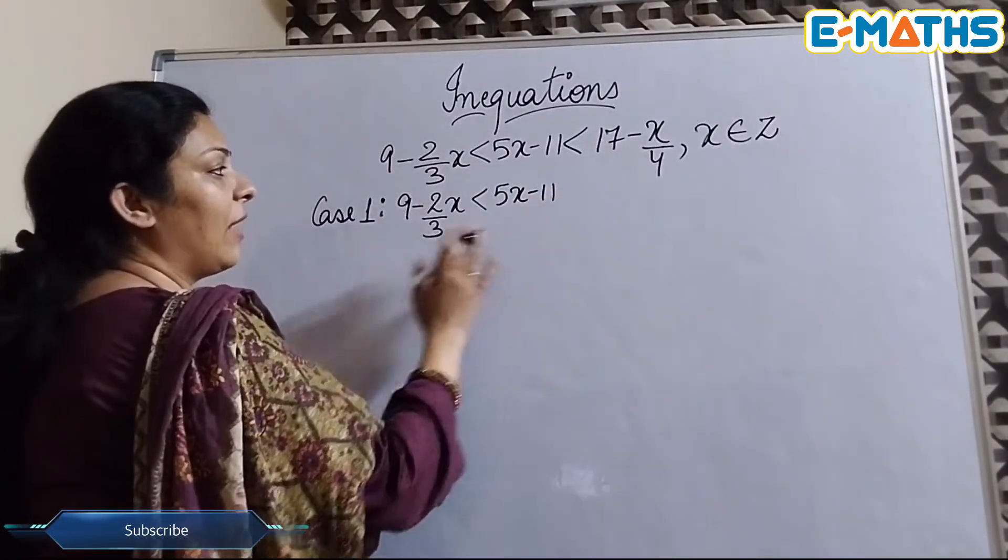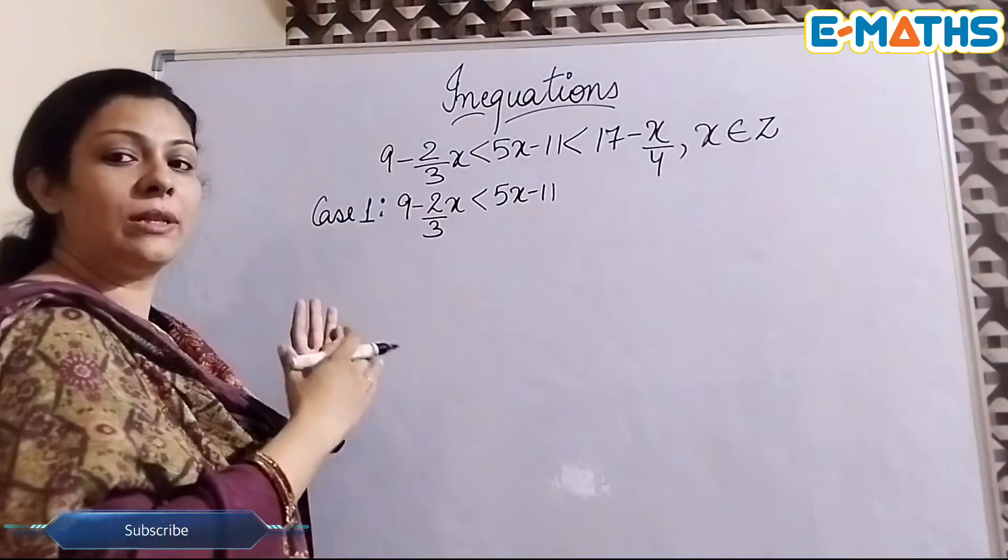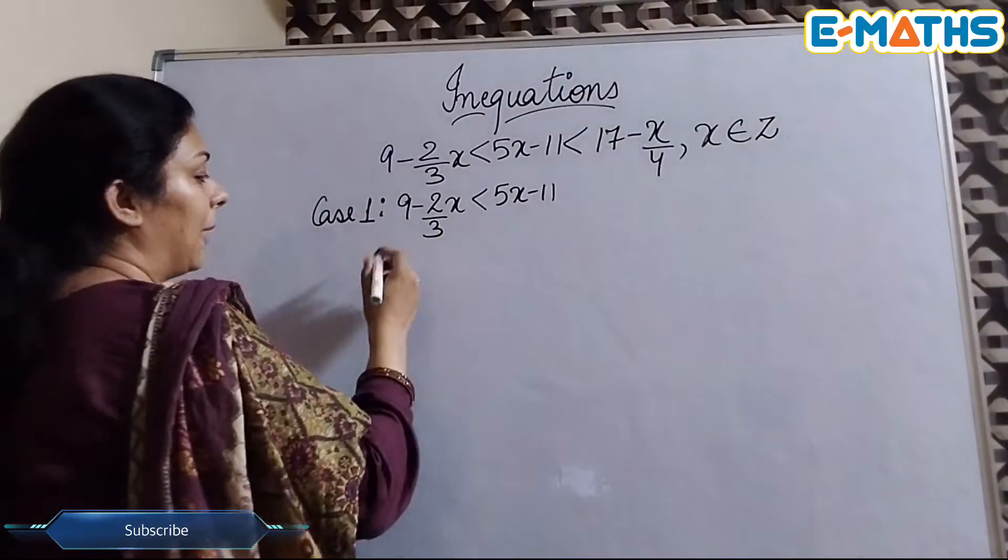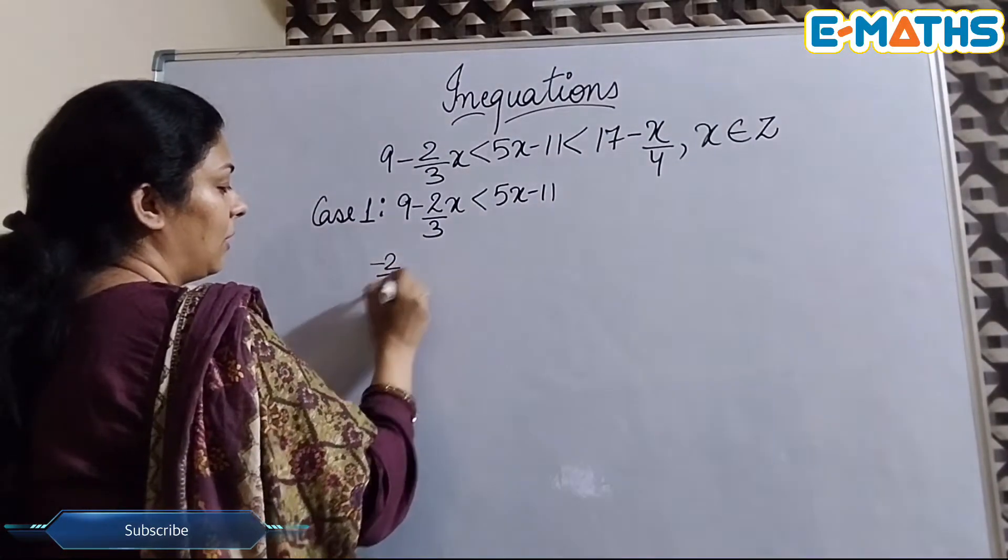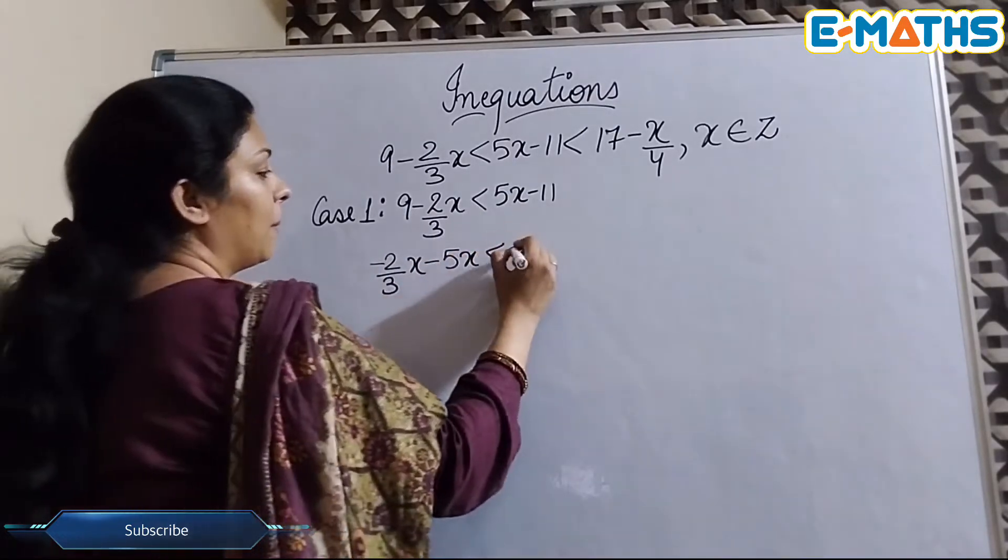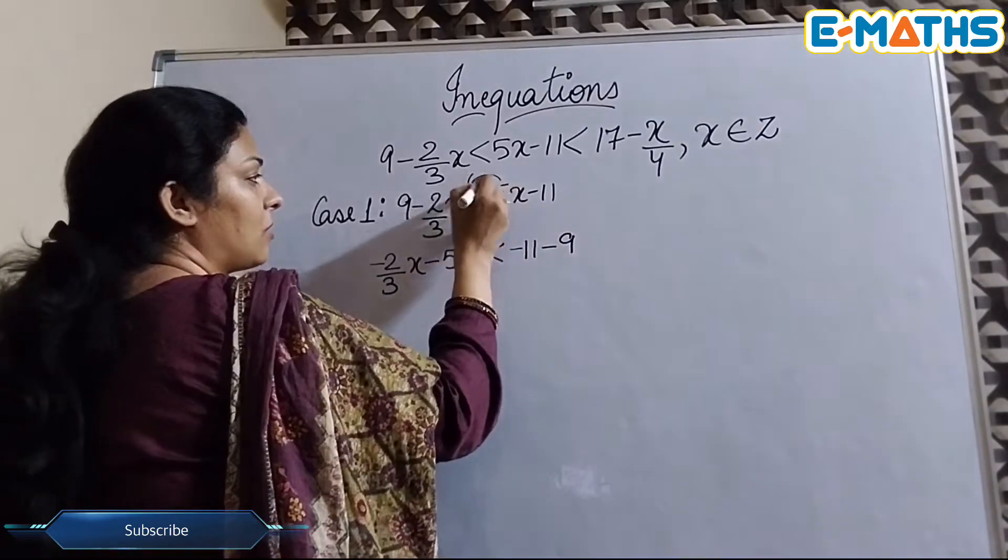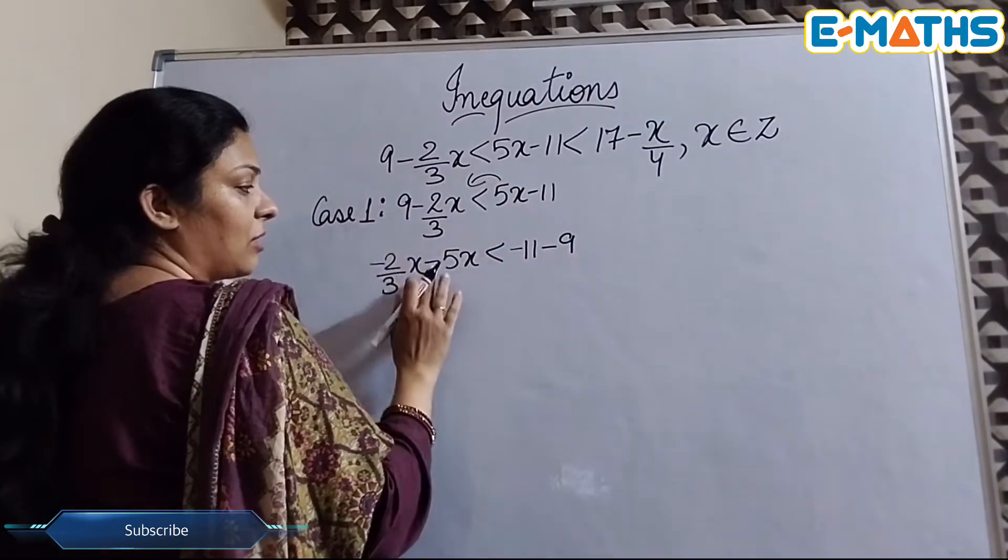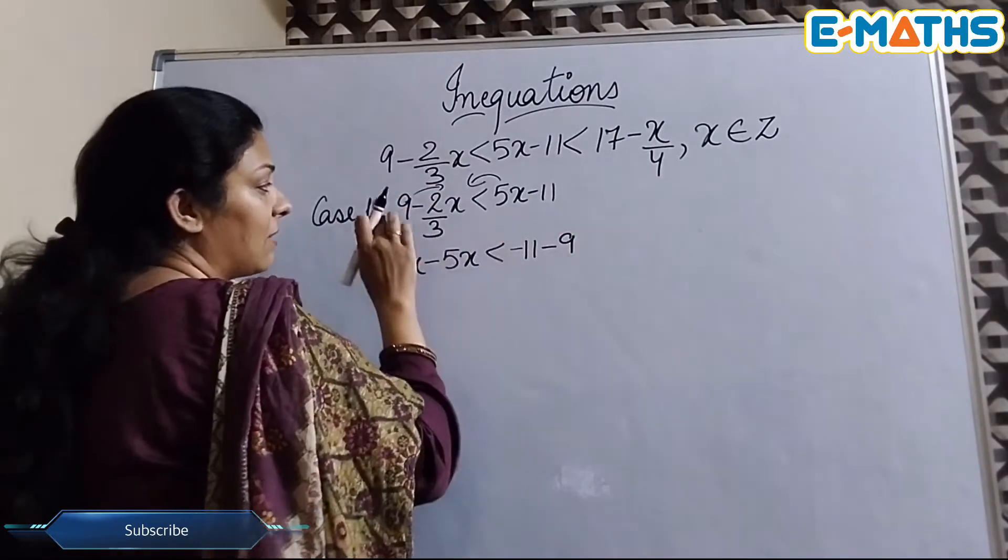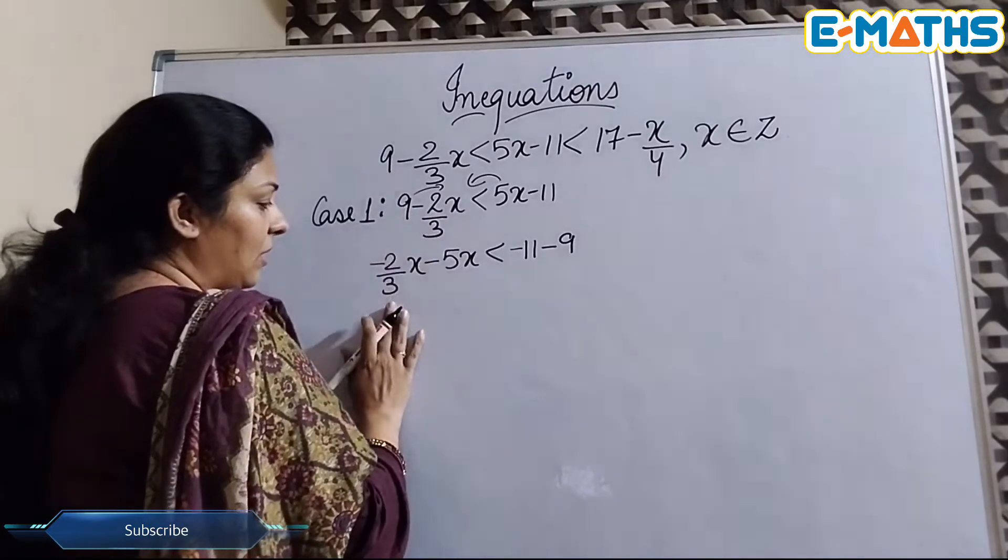Now here if you see, we have 2 terms on both the sides. So we are going to keep x's on one side and constants on one side. So -2/3x, I'll bring this 5x here. So it will be -5x smaller than -11 and -9. Since I've transposed this 5x on the other side, so this is -5x, and I've transposed this 9 on the other hand. That's why the sign of this constant is changed here.